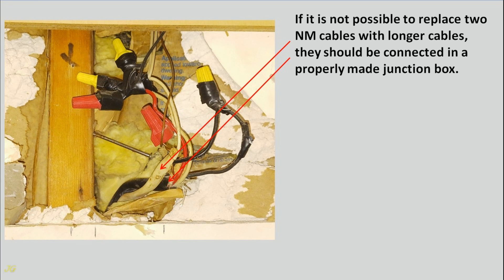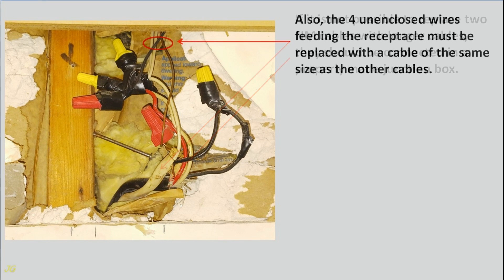If it is not possible to replace 2-NM cables with longer cables, they should be connected in a properly made junction box. Also, the four unenclosed wires feeding the receptacle must be replaced with a cable of the same size as the other cables.